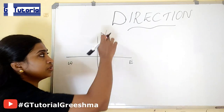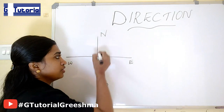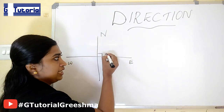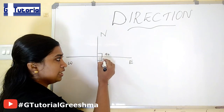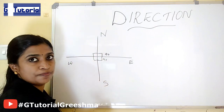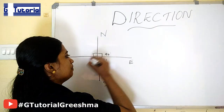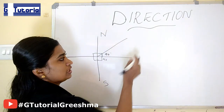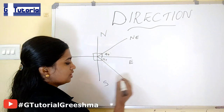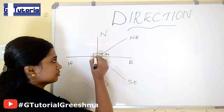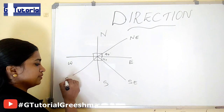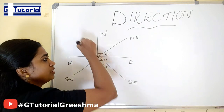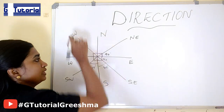The direction between north and east is 90 degrees. Between east and south it is also 90 degrees, and similarly for the other adjacent pairs. If you draw a line through the midpoint of the north-east angle, that direction is north-east. Similarly, south-east, south-west — each of these angles is 45 degrees — and north-west. This is the basic thing you have to understand.